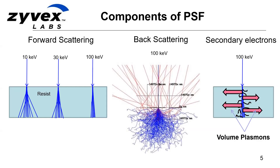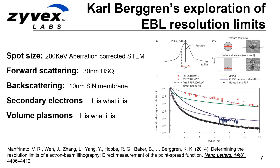There are a number of effects at work here. Forward scattering of electrons as they pass through the resist spreads the beam out — you can reduce that by going to higher energies and thinner resists. Back scattering occurs when electrons pass through the resist, interact with the substrate, and get reflected back up through the resist, which also limits resolution. Finally, secondary electrons and volume plasmons generated by these relativistic electrons — secondary electrons are low-energy scattered electrons, and volume plasmons are charge waves created by the high-energy electrons — both significantly spread out the area over which chemical bonds are broken.